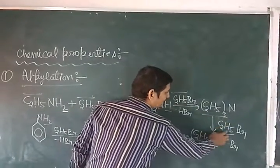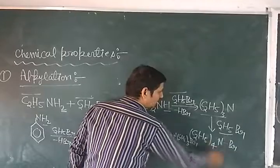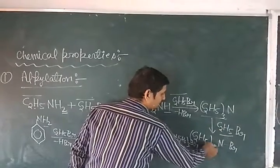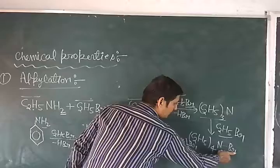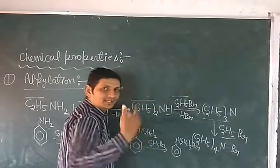Triethyl amine reacts with ethyl bromide to form tetraethyl or we can say quaternary ammonium bromide.